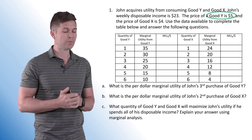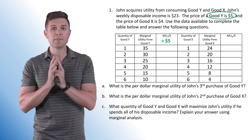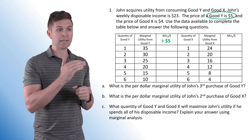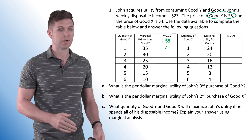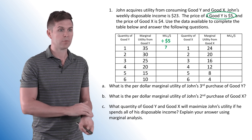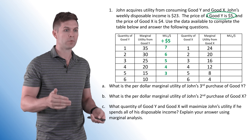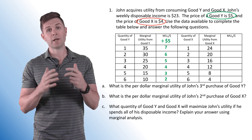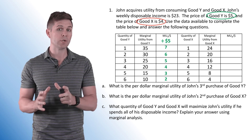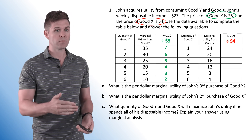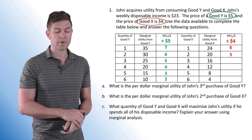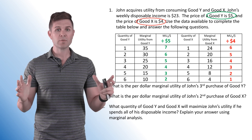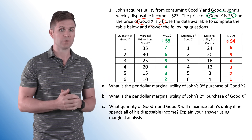Let's fill out this chart first. Good Y is $5, so to get the per dollar marginal utility we divide each marginal utility by 5. That gives us 7, 6, 5, 4, 3, and 2. For good X, we divide by 4 because each unit costs $4. So 24 divided by 4 is 6, 20 divided by 4 is 5, then 4, 3, 2, and 1. Once you have your table filled, we can start answering the questions.